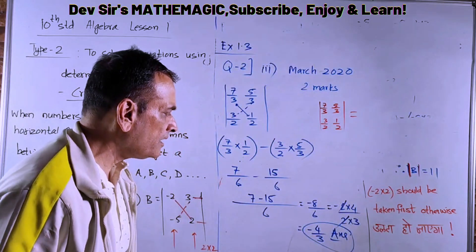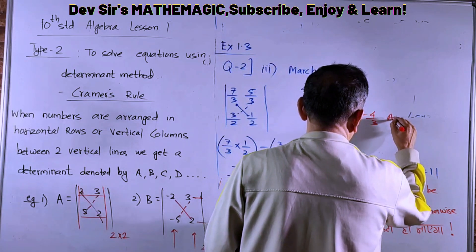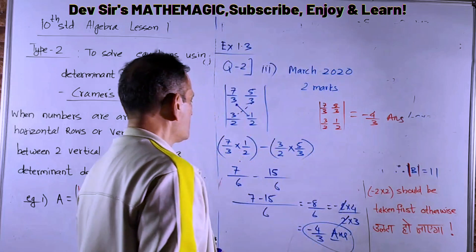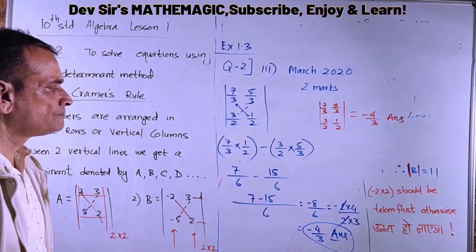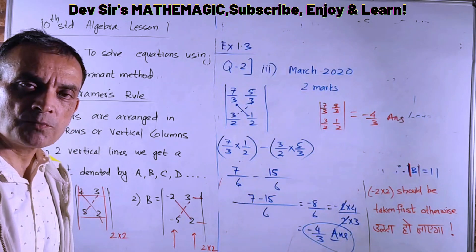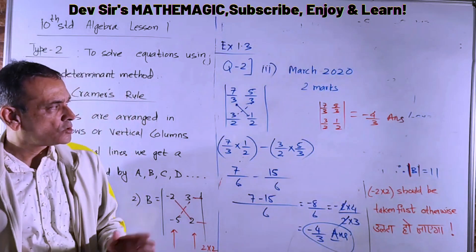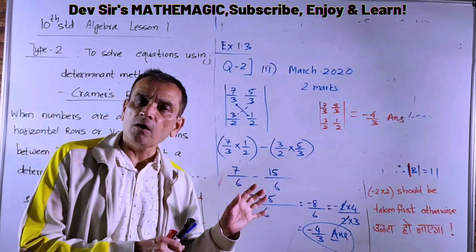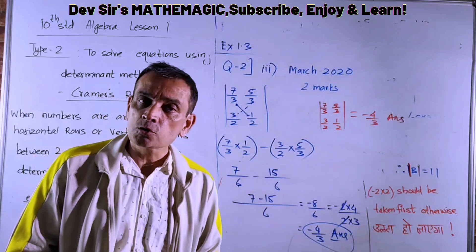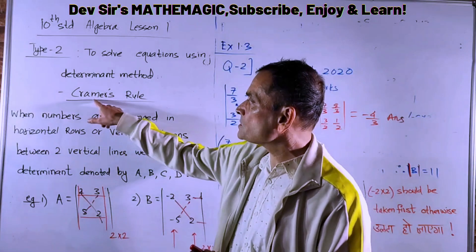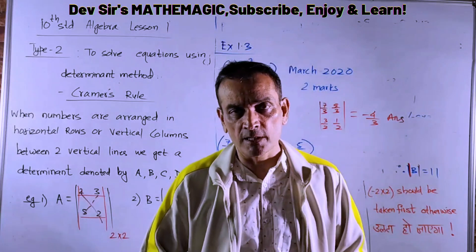Reducing minus 8/6: the value of this determinant is minus 4/3. Now we will see how to solve equations using Kramer's Rule with the help of determinants — one very important use for determinants.